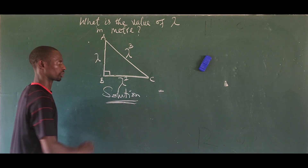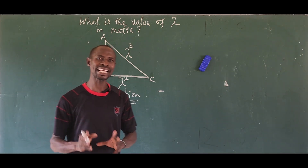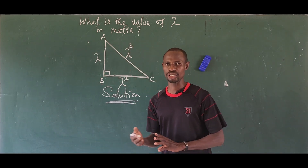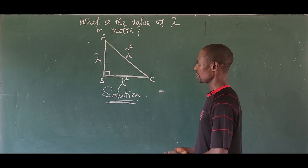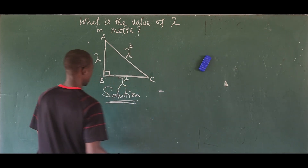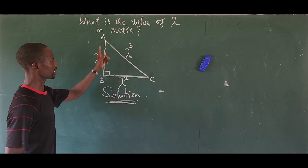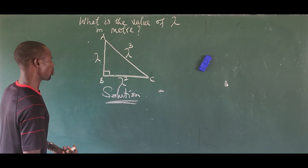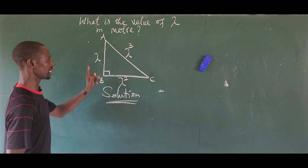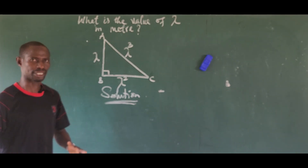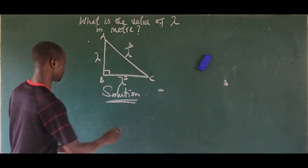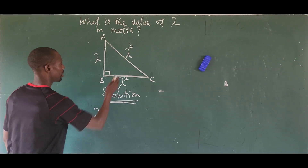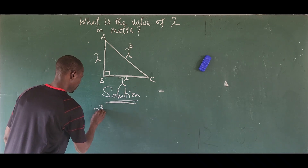Because this is a right-angle triangle, Pythagoras' theorem comes to mind. It states that the square of the hypotenuse is equal to the square of the opposite side plus the square of the adjacent side — we all know that from elementary mathematics. So this can be written as: lambda to the power of three, all raised to the power of two, equals...